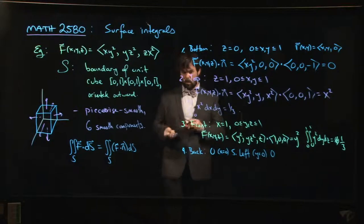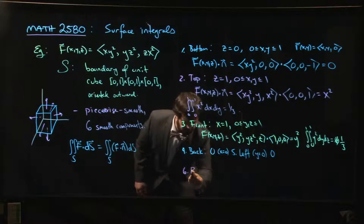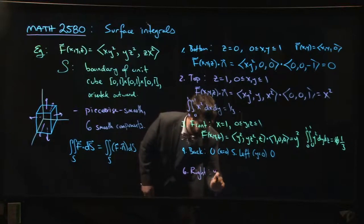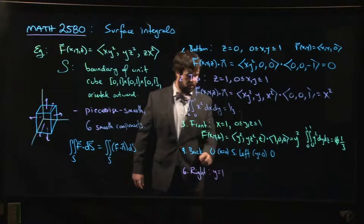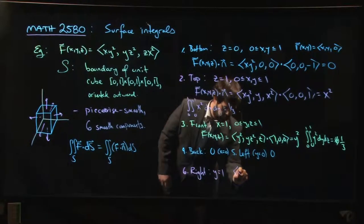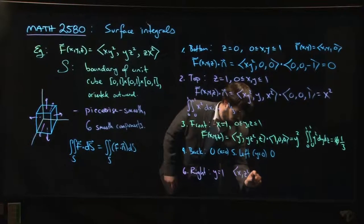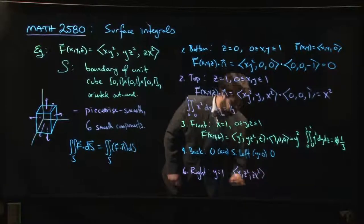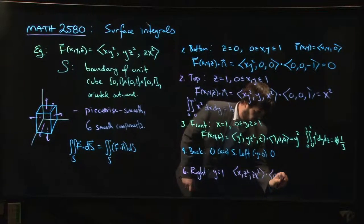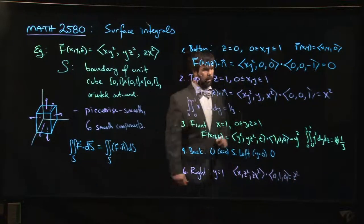That leaves us with one more, the last face, the right hand side. On the right hand side, y equals one, we're going to have (x, z², z, x²) dotted with (0, 1, 0), so that comes out to give you z².